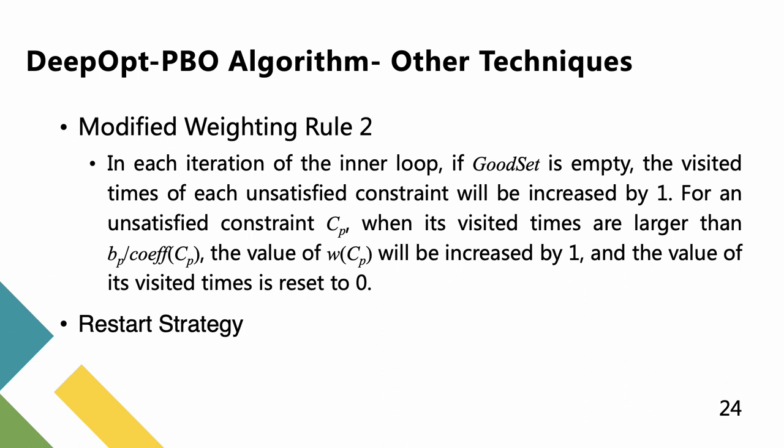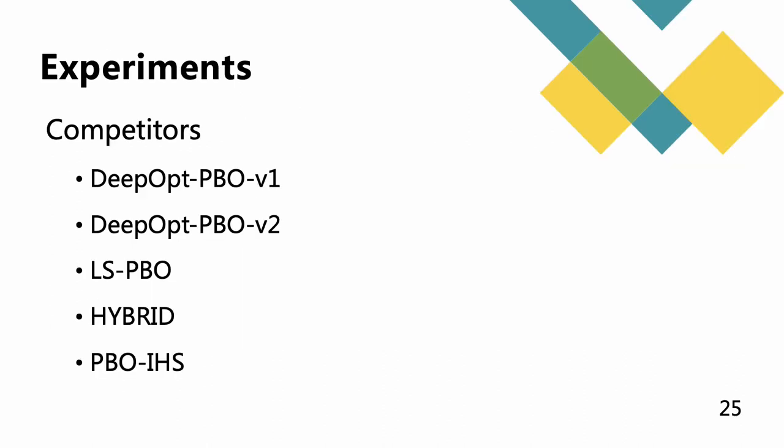The second adopted technique is the restart strategy. Under current assignment α, we can change the original value of each variable with a certain probability, namely from 1 to 0 or from 0 to 1. According to the frequency of using the proposed restart strategy, we propose two versions of DeepOPT-PBO, resulting in v1 and v2. In detail, v1 doesn't use the restart strategy. v2 is run for half of the computation time given to the algorithm based on restart strategy, while the second half of the available computation time of v2 is given to the algorithm without the restart strategy.